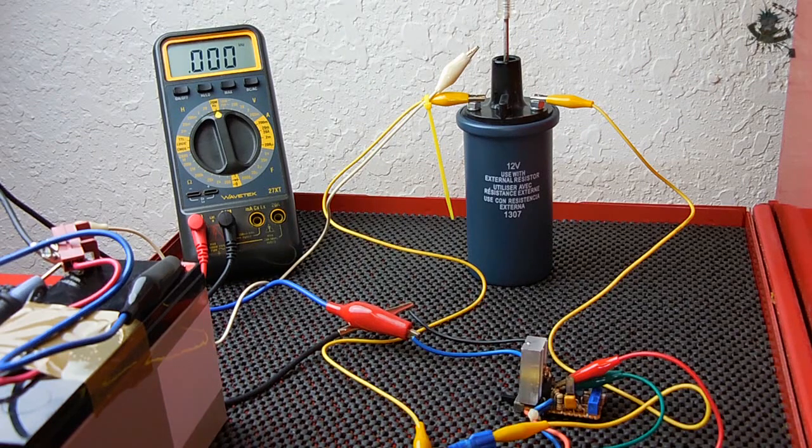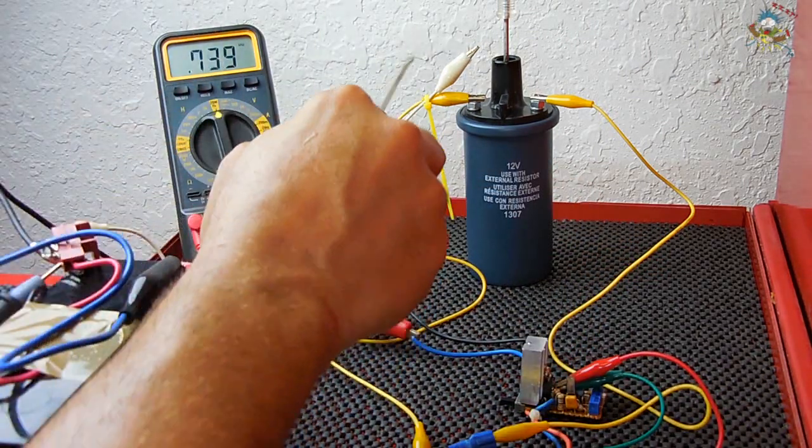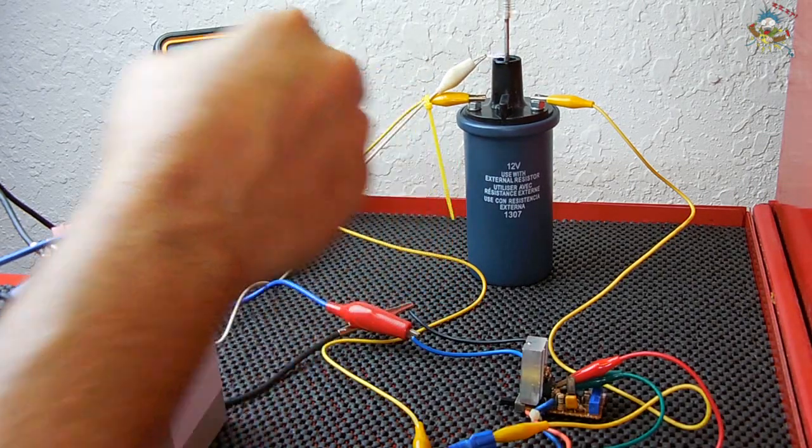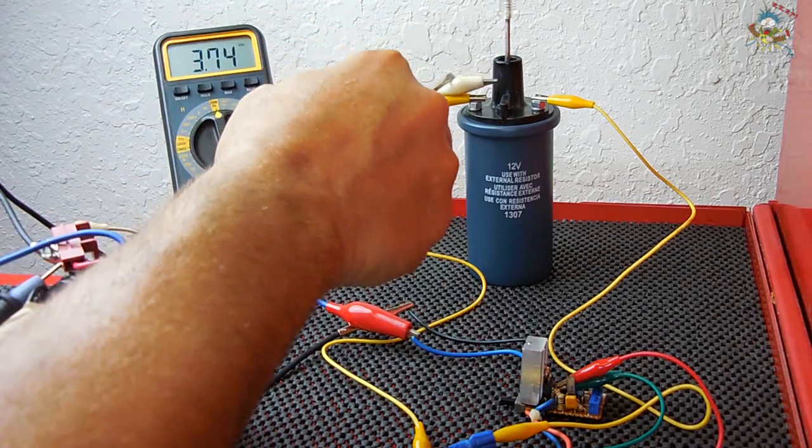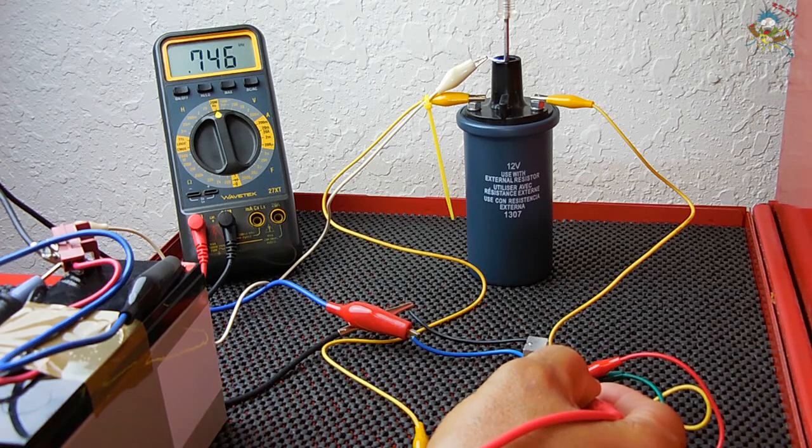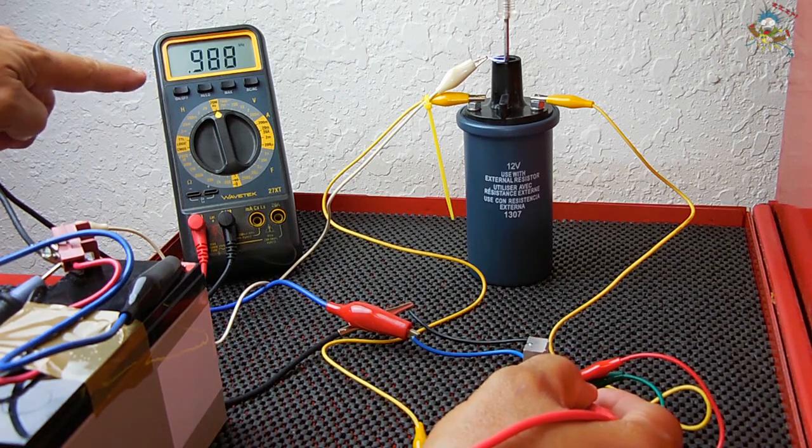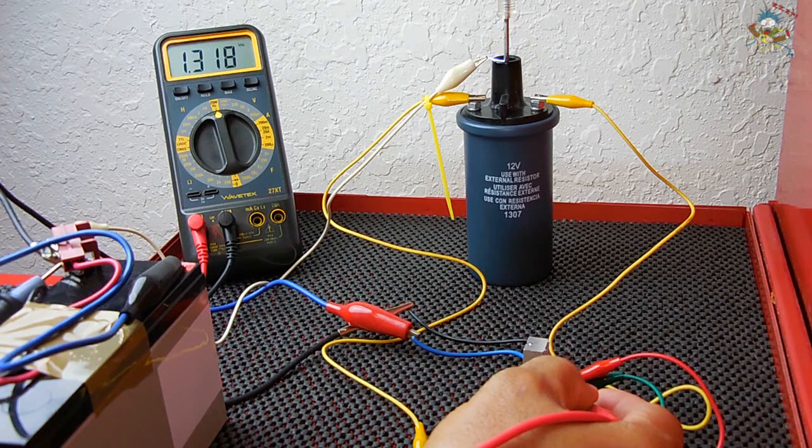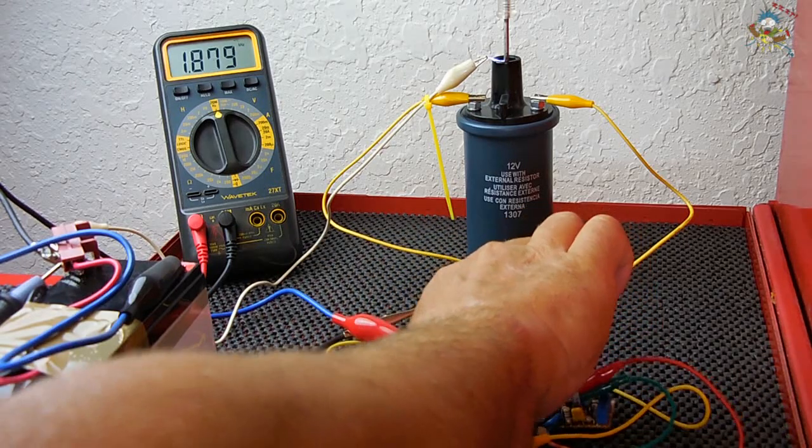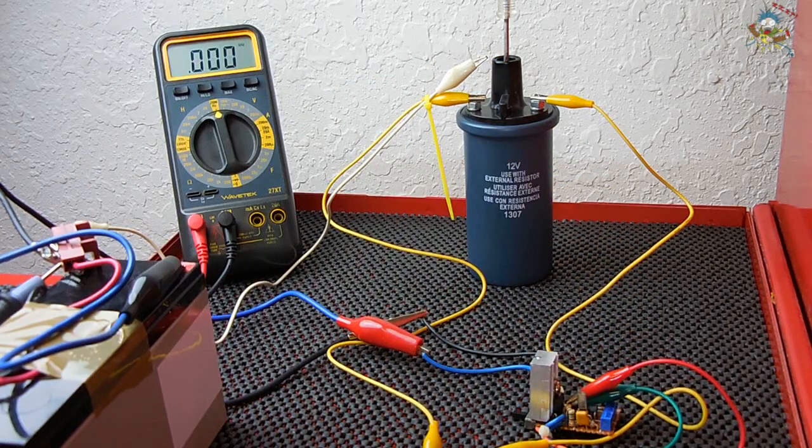Let's switch to a different value again. Now this is a 333. Let's turn it on. See, it's too far away. And you can see that was around 1.3 to 1.4 kilohertz.